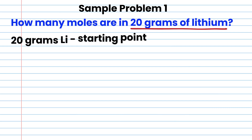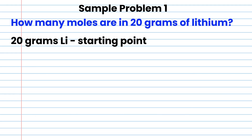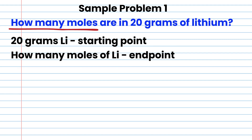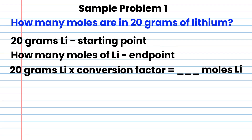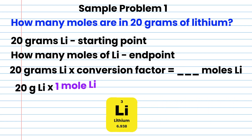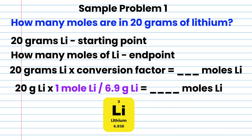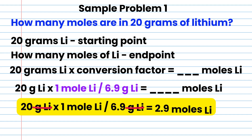Conversion from grams to moles. Sample problem 1: how many moles are in 20 grams of lithium? Starting point is 20 grams of lithium; end point is moles of lithium. The conversion factor has grams in the denominator and moles in the numerator: one mole over 6.9 grams lithium. Cross out the grams, and the result is 2.9 moles of lithium.